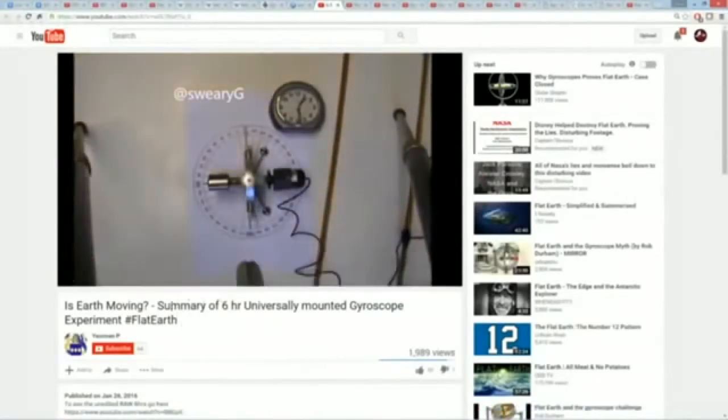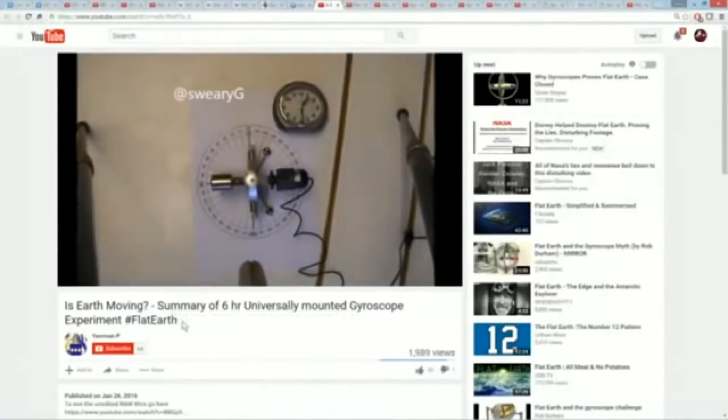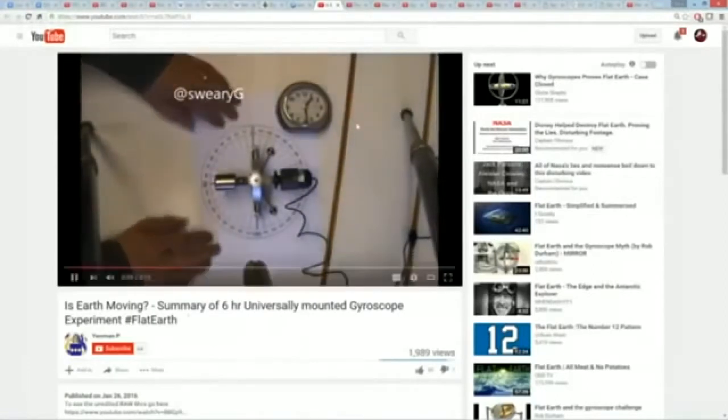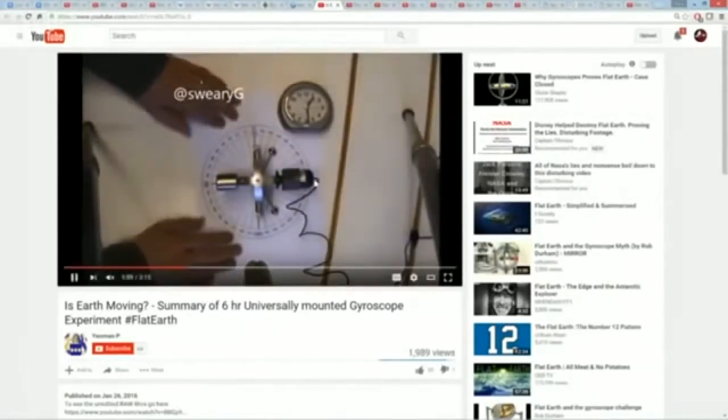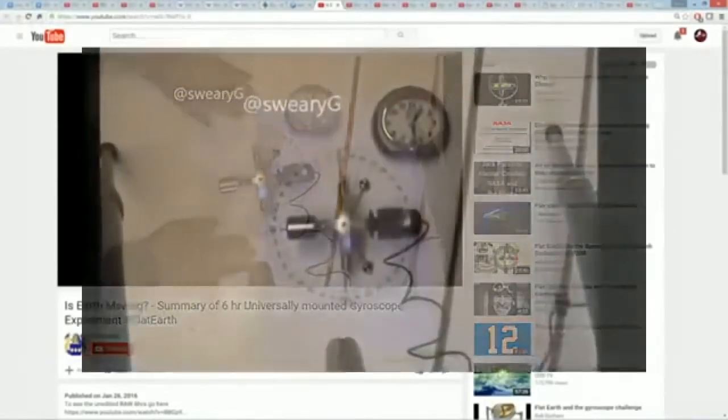Because if Foucault could do it several hundred years ago with his cheesy gyroscopes, the notion that we couldn't replicate it today with high-end 21st century engineered gyroscopes, and also we have the advantage of motors which will keep that gyro spinning continuously, and we still cannot duplicate it, that tells me that Foucault lied.